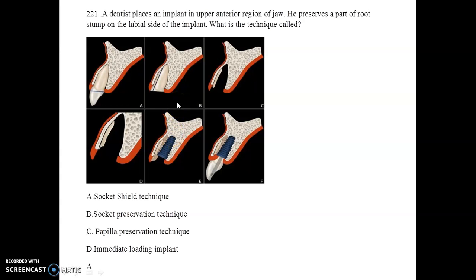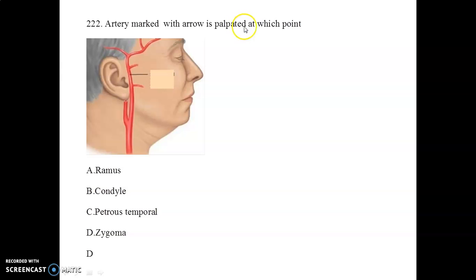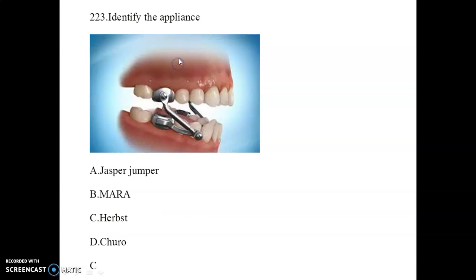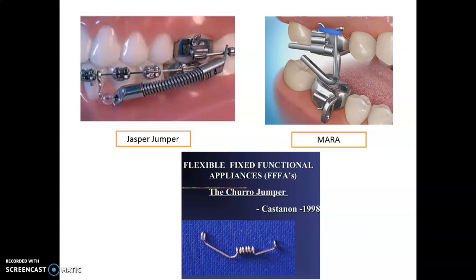The artery marked with the arrow is palpated at the zygoma region. Next, identify the appliance — it is a fixed functional appliance. This is the Herbst appliance. We often get confused among fixed functional appliances, so here are a few important ones: the Jasper Jumper appliance, the MARA appliance, and the Churro Jumper appliance.